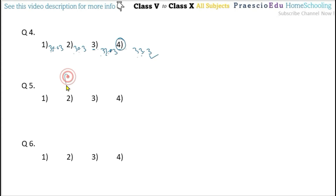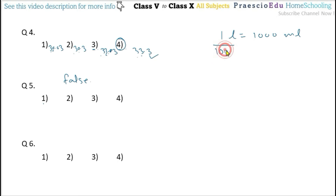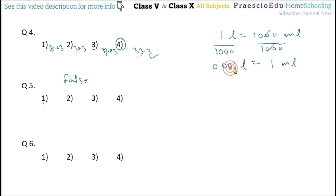Question number 5: which of the following statements is false? Option 1: 1 ml equals 0.001 liter. This is correct, because 1 liter equals 1000 milliliters. Dividing both sides by 1000 gives 1/1000 equals 0.001 liter equals 1 ml. So option 1 is correct. Option 2: 1 ml equals 0.01 liter — but we already calculated 1 ml equals 0.001 liter, so this is a false statement.